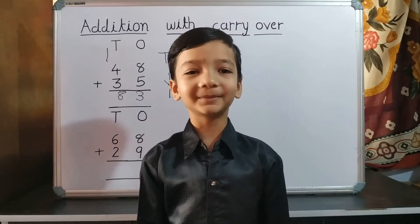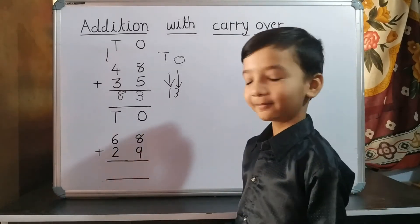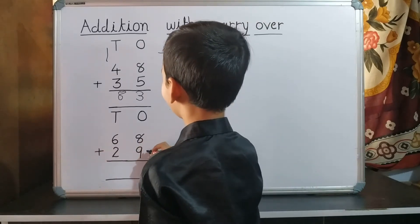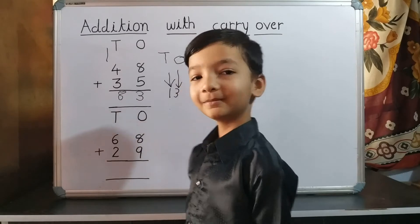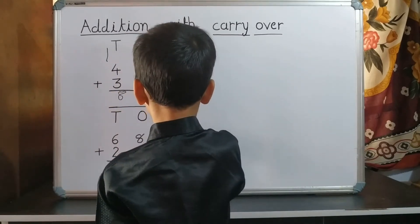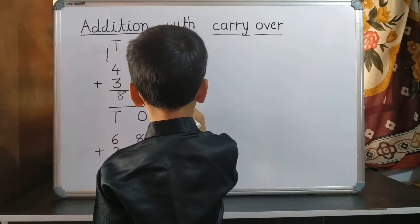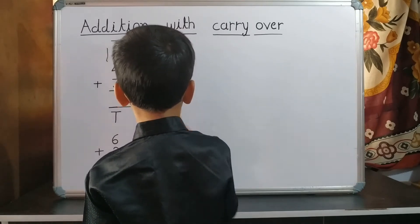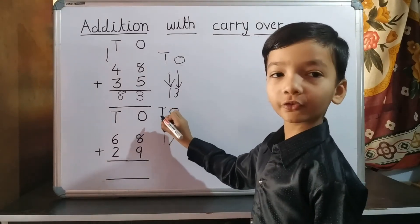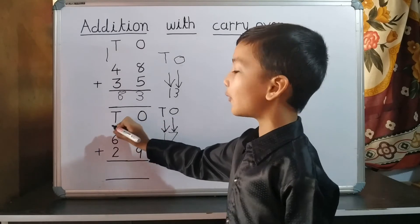Another sum. 68 plus 29. First we do addition of one's place. 8 plus 9 equals 17. 7 is on one's place and 1 is on ten's place. So we write 7 on one's place and 1 carryover to ten's place.